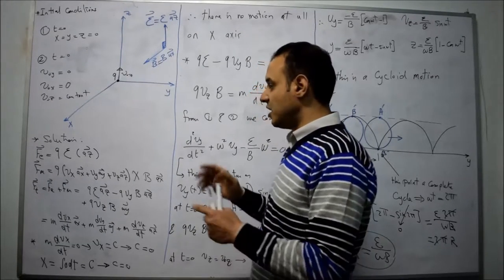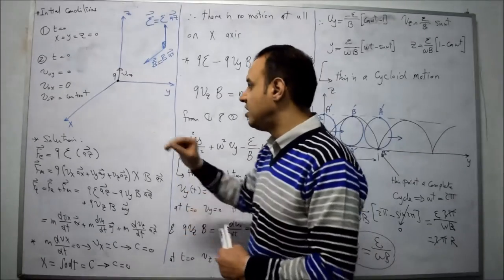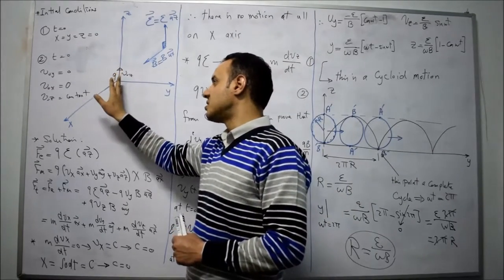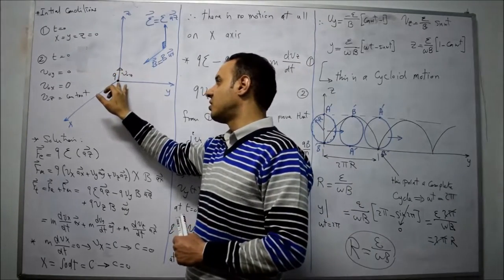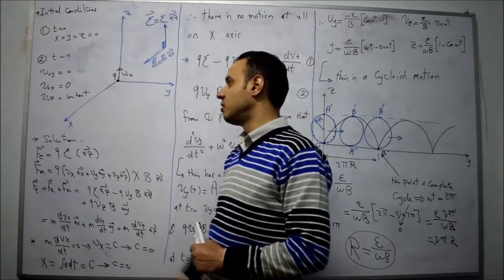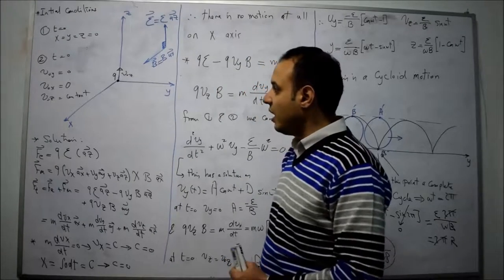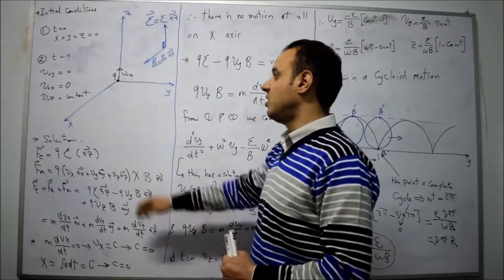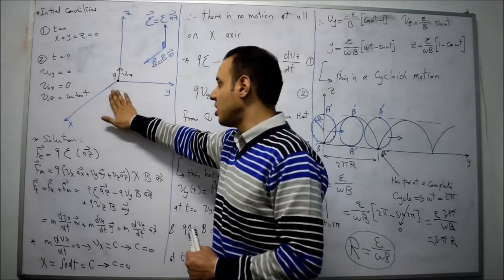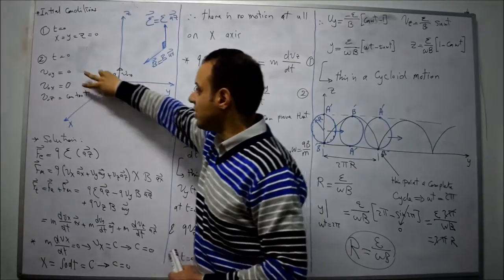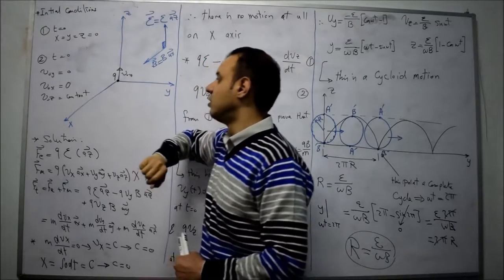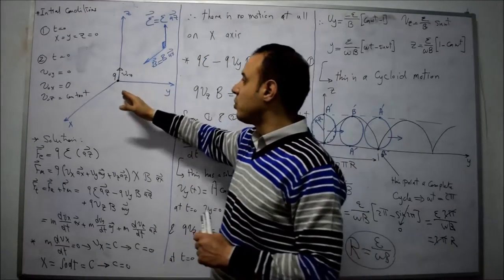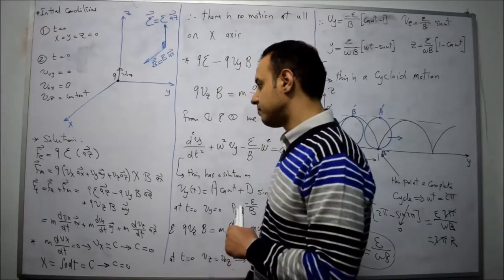The initial conditions at t equal to zero: the motion starts from the origin. The initial velocity in the x direction and the y direction are zero. We have only a constant velocity in the direction of z.